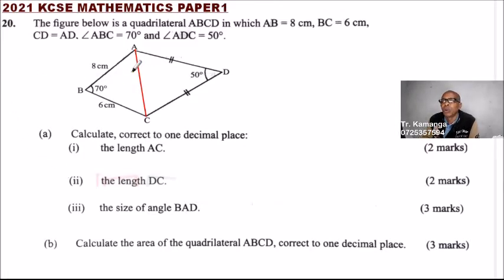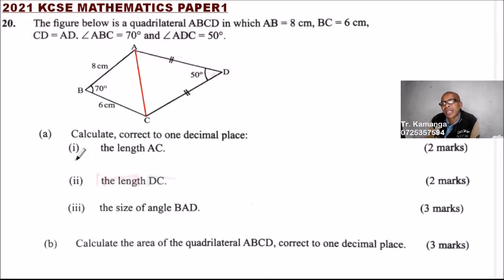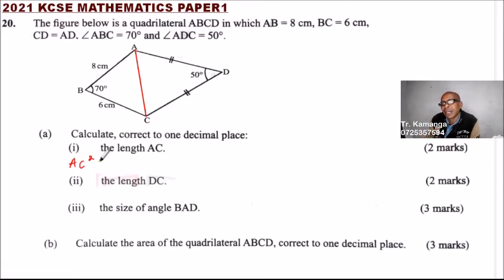Looking at triangle ABC, we can use the cosine rule to find AC. So we can say AC squared is equal to...